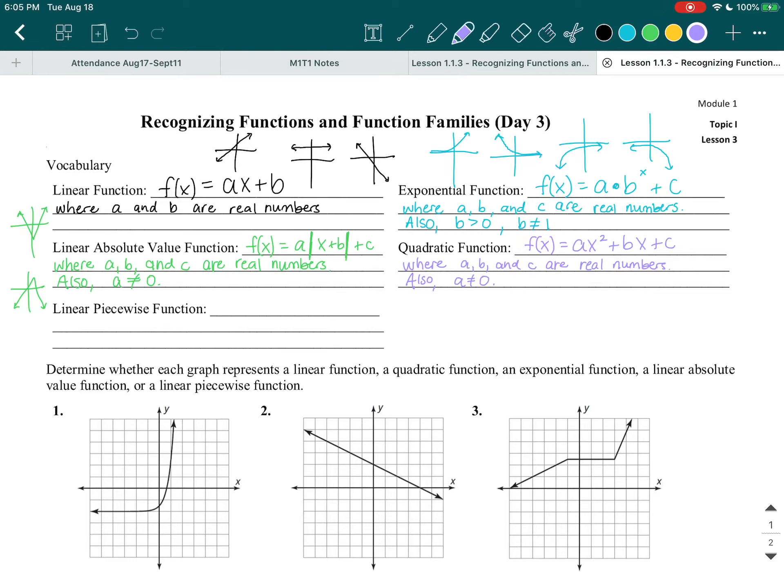And so for these graphs, what do they look like? Let me draw them off to the side. They're going to look like a curvy u, like that. Either points upwards or downwards. So these are your quadratic functions.